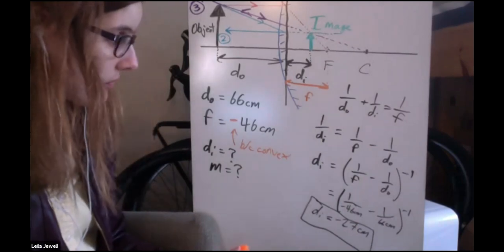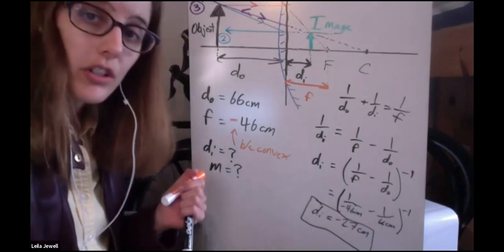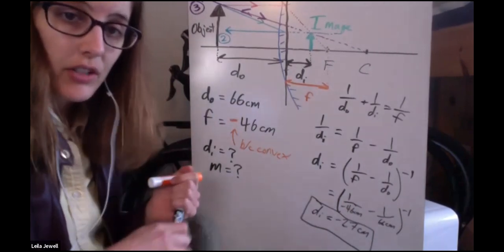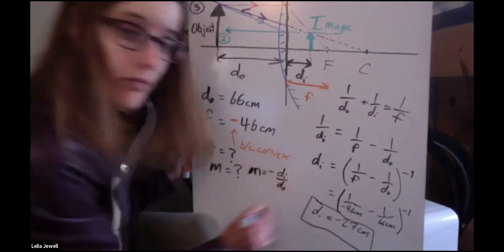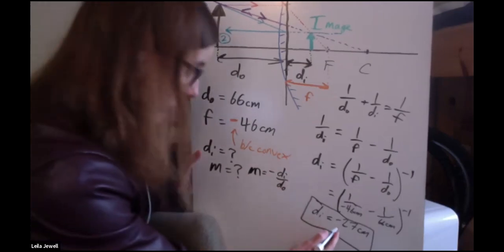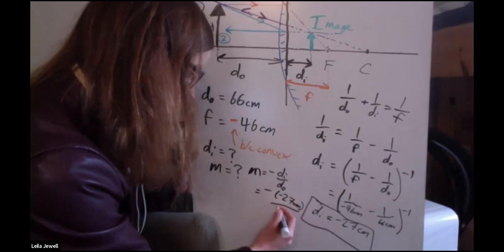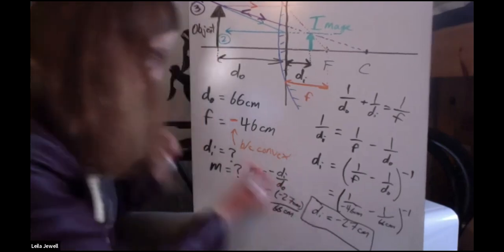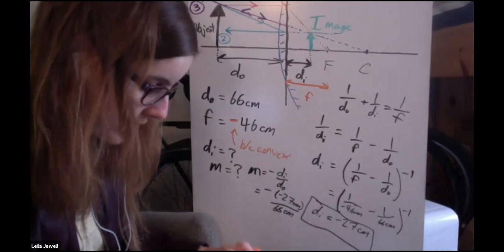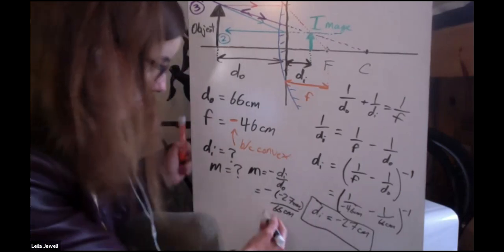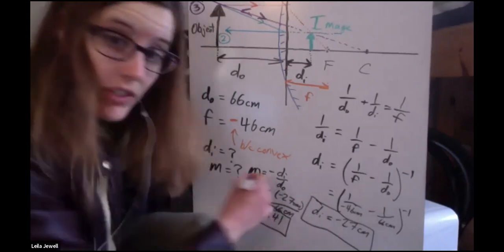Next, we want to solve for magnification. We don't know anything about the heights here, so that's not useful. But we do know the magnification is negative d_i over d_o. We just solved for d_i and already know d_o. So negative negative 27 centimeters divided by 66 centimeters. Those two negatives cancel to become positive, so just 27 divided by 66, which is 0.409. With two sig figs, 0.41. The centimeters cancel out, so magnification is a unitless quantity.